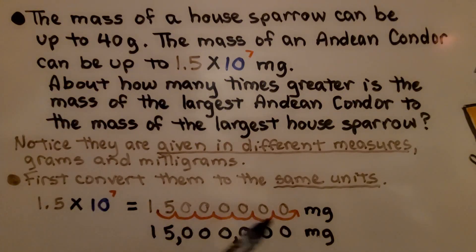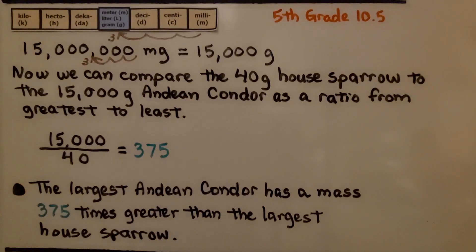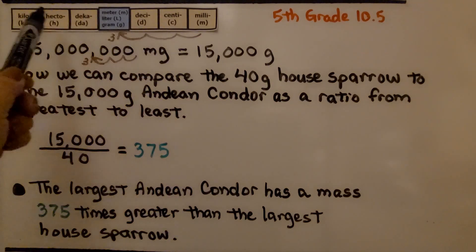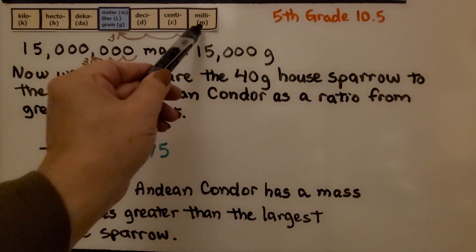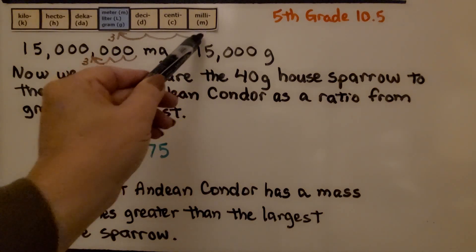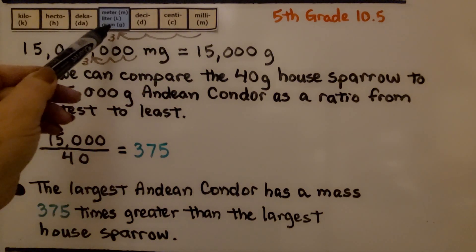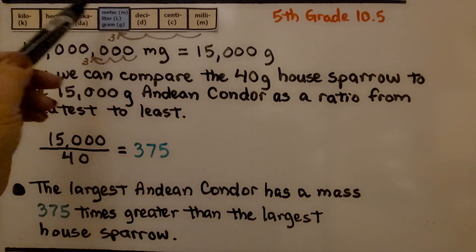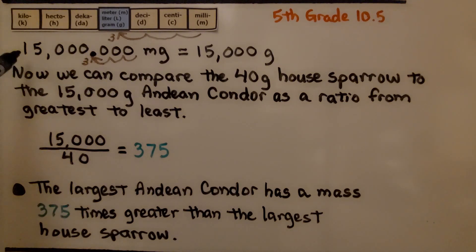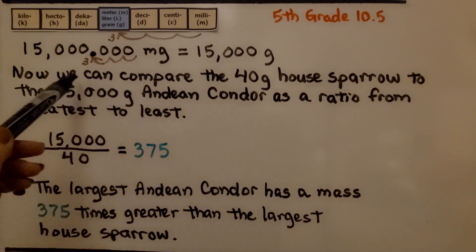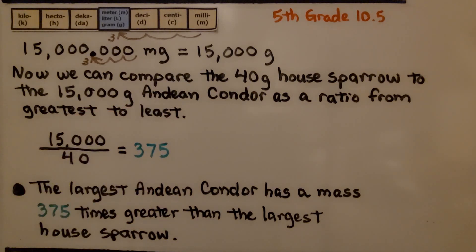We have this written in standard notation and we can convert it to grams. Back in fifth grade math lesson 10.5, we learned how to convert in metric for meters, liters, and grams. We have fifteen million milligrams. From milligrams, we hop one, two, three places to the left to get to grams. That means fifteen million milligrams is equal to fifteen thousand grams.